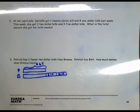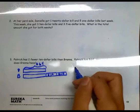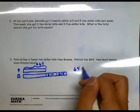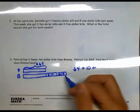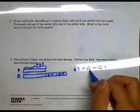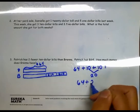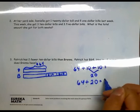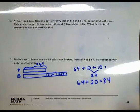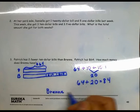So in order to find out how much Brenna has, I'm going to add $64 plus $10 more plus $10 more. 10 plus 10 is 20. 64 plus 20 gives me 84. Brenna has $84.